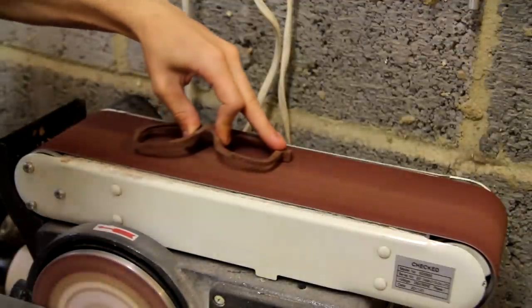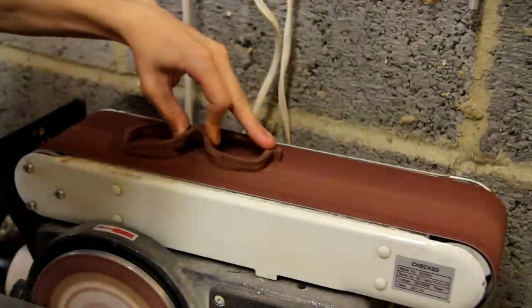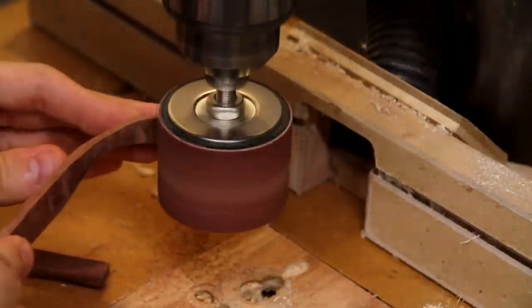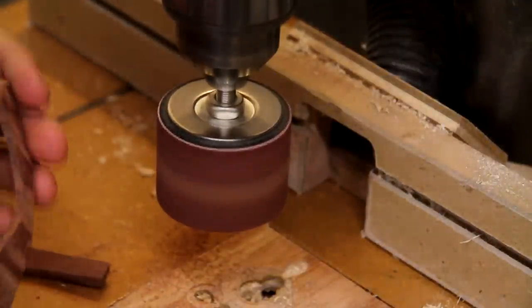I'm also sanding away the thick blocks which I left on the back of the sunglasses because I won't need those anymore. And just before we can go ahead and attach the hinges, I'm finishing up some shaping on the temples.